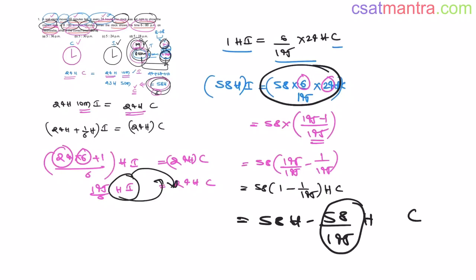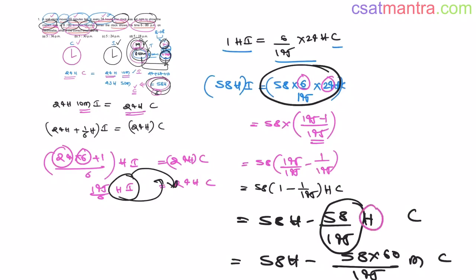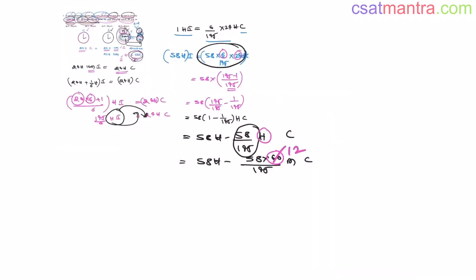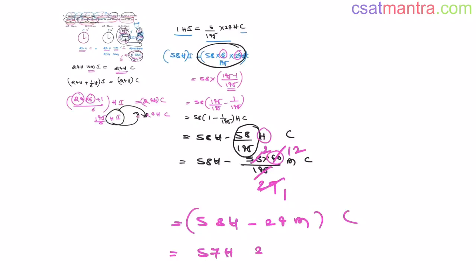This 58/145 is less than 1 hour, so I want to convert it to minutes: 58/145 × 60 minutes. Since 5×12=60 and 5×29=145 and 2×29=58, this simplifies to 24 minutes. So the result is 58 hours minus 24 minutes on the correct clock, which equals 57 hours 36 minutes on the correct clock.